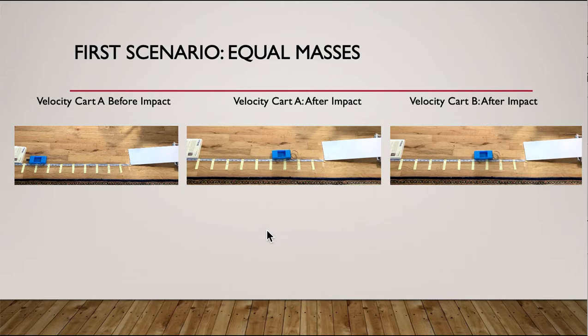Cart A after impact. This one is really easy because cart A comes down and just stops. So for this one, the velocity of cart A after impact is zero. And if you're doing it by video, you can really get everything you need off of that one video.